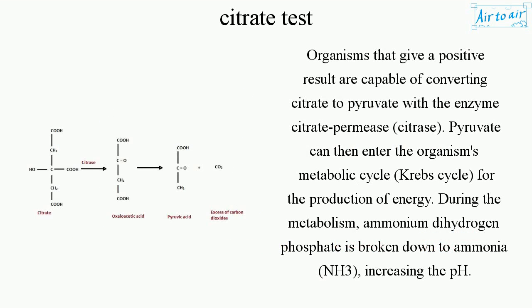Organisms that give a positive result are capable of converting citrate to pyruvate with the enzyme citrate permease and citrase. Pyruvate can then enter the organism's metabolic cycle — the Krebs cycle — for the production of energy.